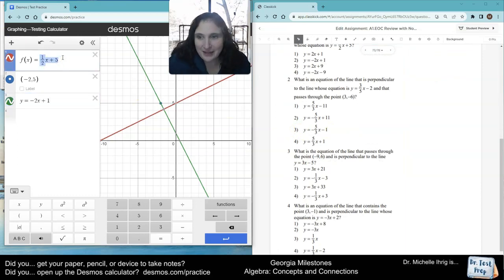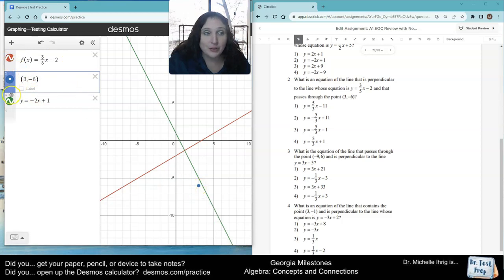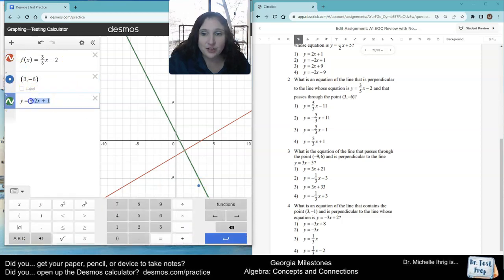We've got three-fifths x minus two. It has to go through the point three negative six, so I'm just going to change this to three negative six. And then I'm going to make sure I type in three negative six. All right, so it's got to go through that blue dot. So, now we're going to type in the answer choices.